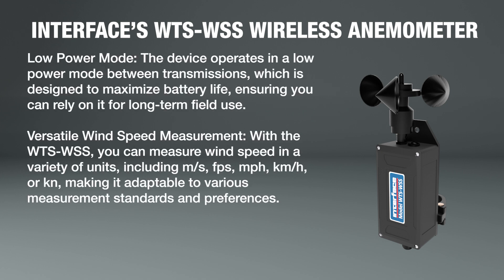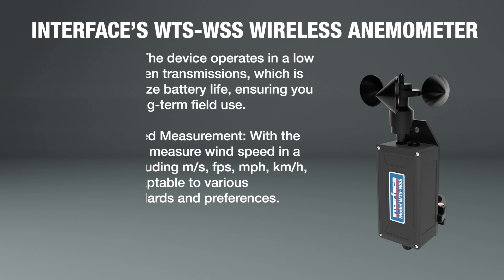Low Power Mode: the device operates in a low power mode between transmissions, which is designed to maximize battery life, ensuring you can rely on it for long-term field use. Versatile Wind Speed Measurement: you can measure wind speed in a variety of units, including meters per second, feet per second, miles per hour, kilometers per hour, or knots.